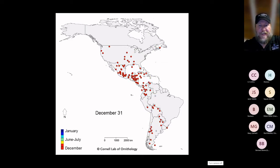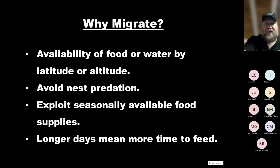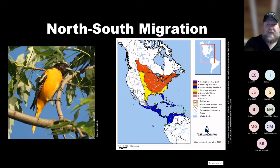They react strongly to the lengthening and shortening of the days. Why do they migrate? Availability of food. If you're a bug eater, you're not going to hang around in winter — that food source won't be here. But they come back because the longer days, available food supplies are really good, and there's a lot less predation here than in the tropics. A good classic example for our area would be the Baltimore Oriole and its north-south migration.